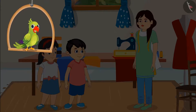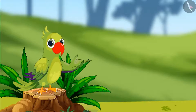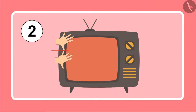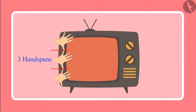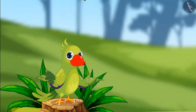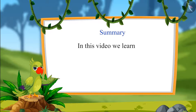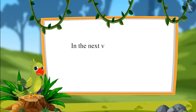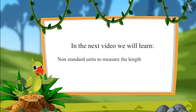So did you see children, to know the length of an object we measure it. In this video, we measured objects using handspans — just like the width of this TV, which is one, two, three — three handspans wide. So children, that was all for today. We learnt some non-standard units to measure the length of objects by hand. Till then, bye bye children.